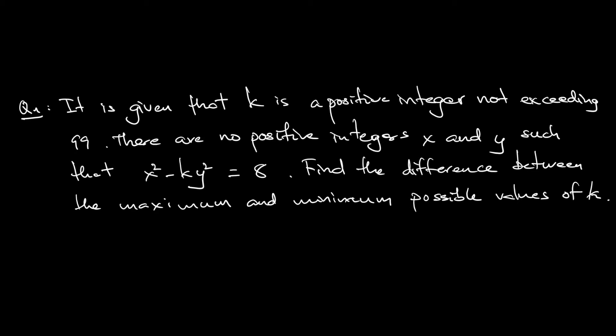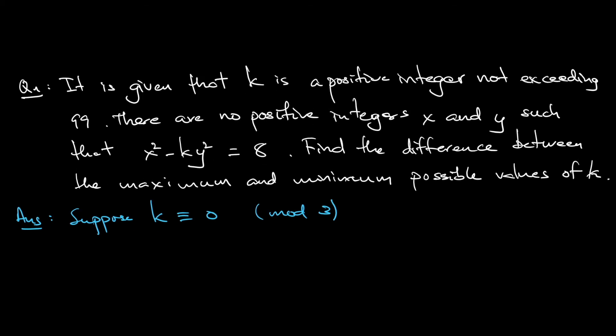So how to solve this number theory question? Suppose my k is divisible by 3, so that means it is congruent to 0 mod 3. Notice that any integer a, any square a² will always be congruent to 0 or 1 mod 3. Another way of saying any square number divided by 3, the remainder can only be 0 or 1. It cannot be 2.